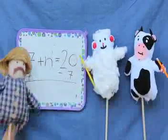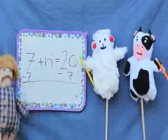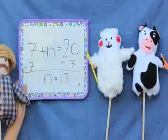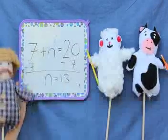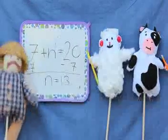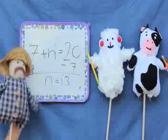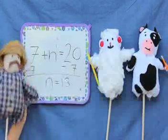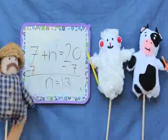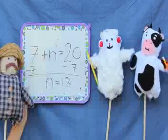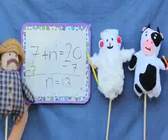The next step is actually the last and most simple. You see? 20 minus 7 is 13, which means that n equals 13. And that's the answer. Oh, that's actually pretty simple. Yeah.